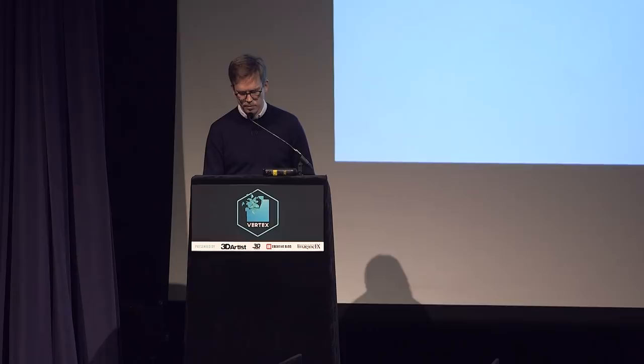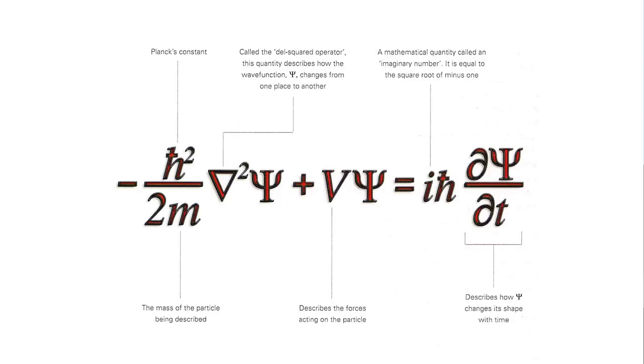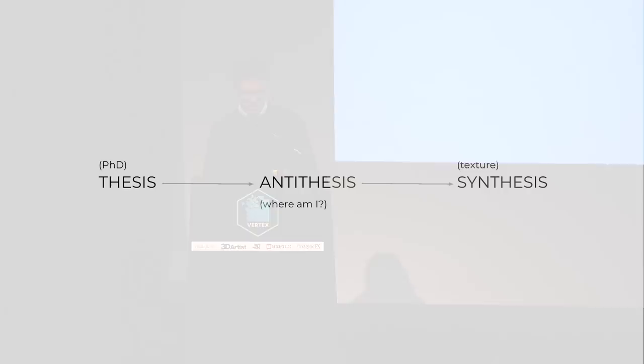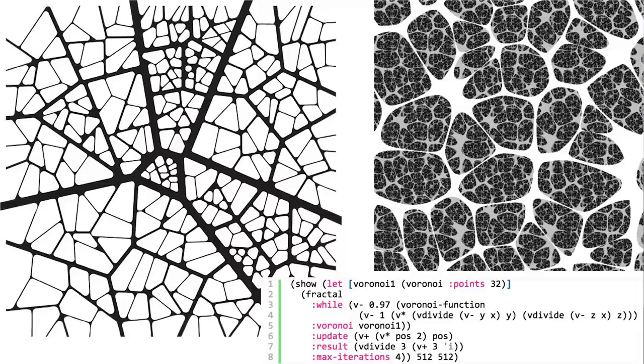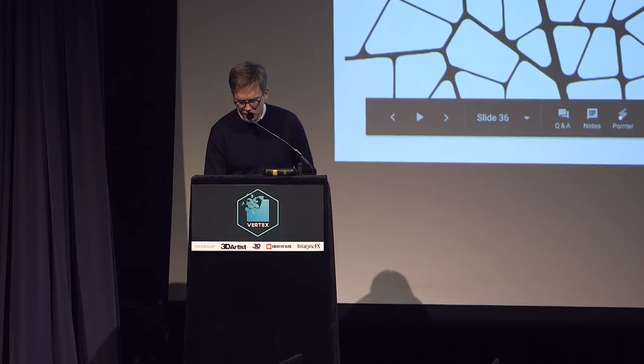That summarizes how I went from noise synthesis to texture synthesis. Procedural techniques are recipes to come up with a final result. The recipes can be written in plain code — for example, this code generates a fractal Voronoi pattern, and by changing parameters like 0.97 or other values, you obtain something different.